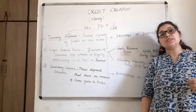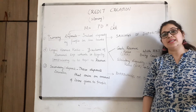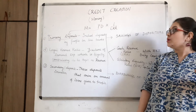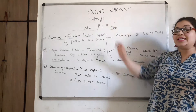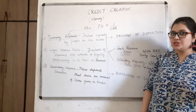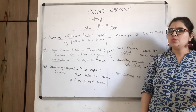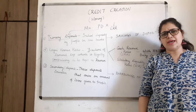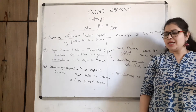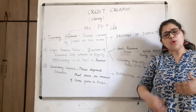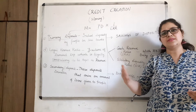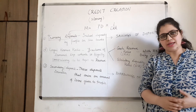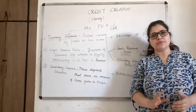Now, to understand this growth process, we need to understand one concept — which is the concept of credit creation, or in simple words, money creation. It is a very important topic: 4, 5, or 6 marks — almost every year I see this question. In one set or another, one question definitely comes from this. Very important question.